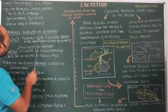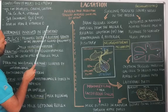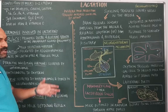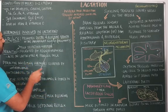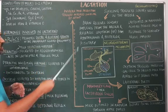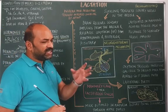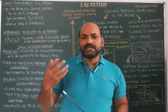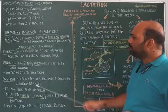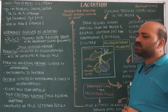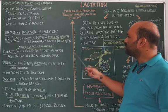Human chorionic somatotropin promotes ductal as well as alveolar growth — that is, growth of the mammary ducts or lactiferous ducts along with the alveolar cells in the mammary gland. Thereby, during the gestation period, the size of the mammary gland starts increasing under the influence of human placental lactogen or human chorionic somatotropin.